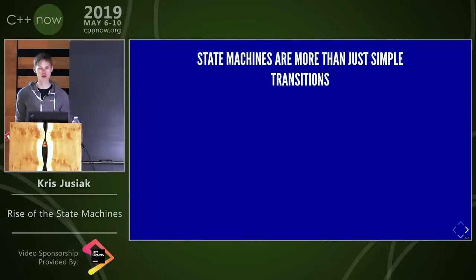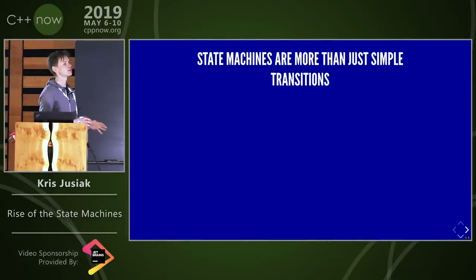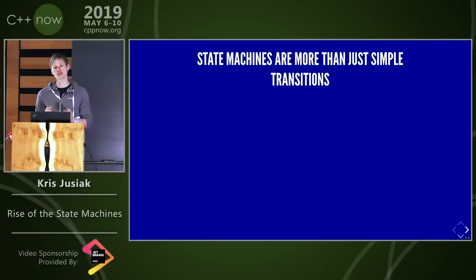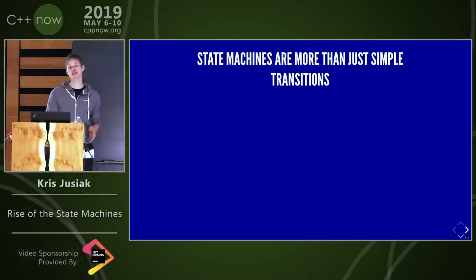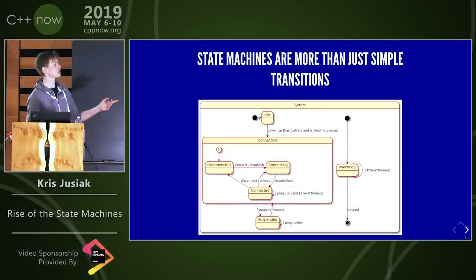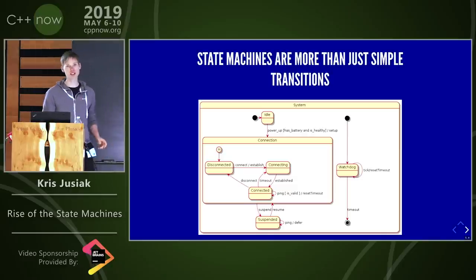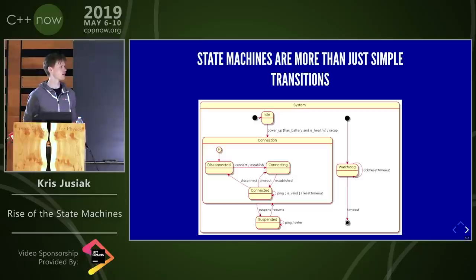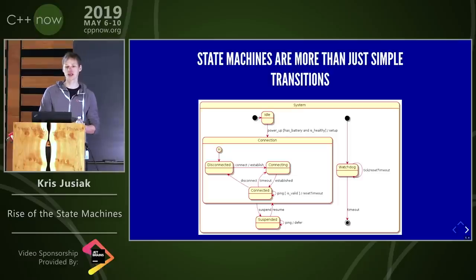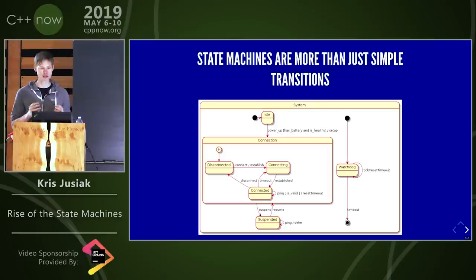Something to remember: state machines are more than just simple transitions. The connection example is very simple so I can implement it in many different ways and fit it on slides. However, state machines are more complex — here's an example of a system state machine where part of it is the connecting state. You can imagine the state machine for Skynet would be way more complex than that.